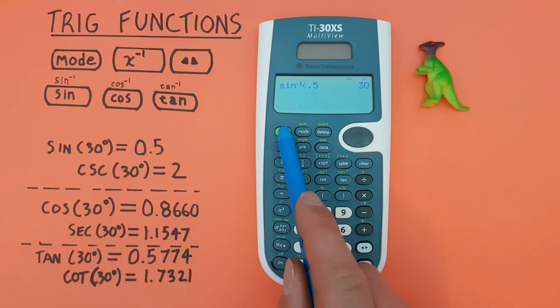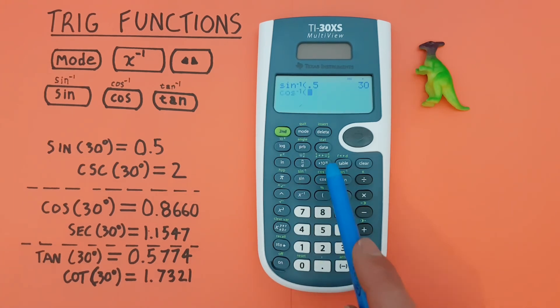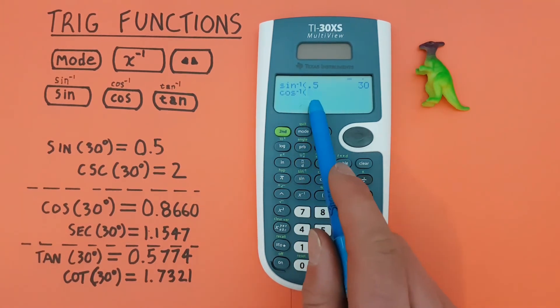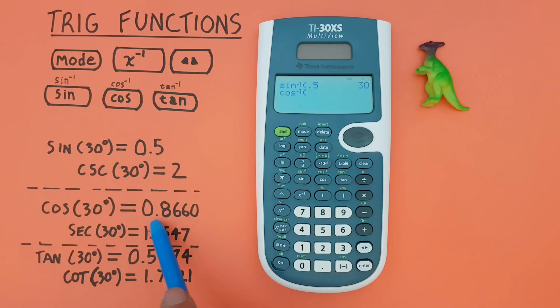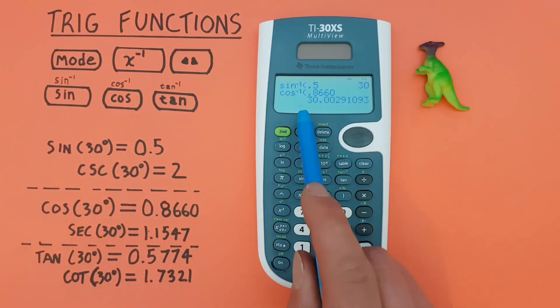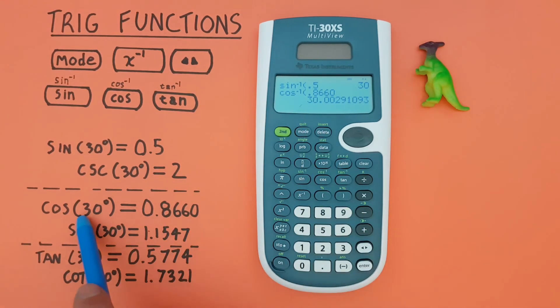For arc cos, we would go second cos, there we go. And if we enter 0.8660, we see we get a result that rounds to 30 degrees.